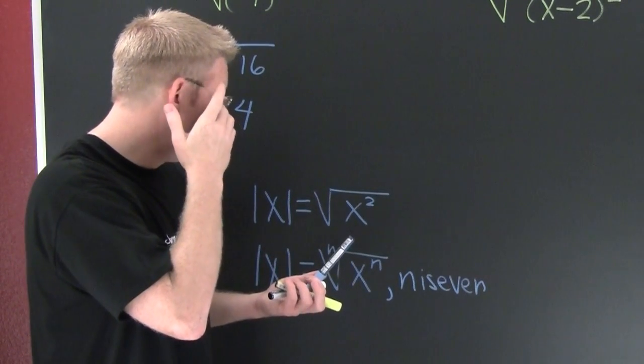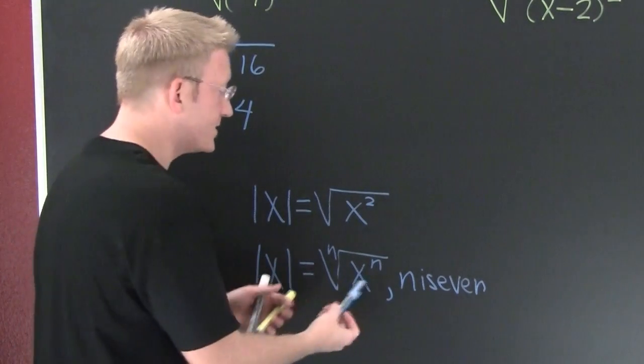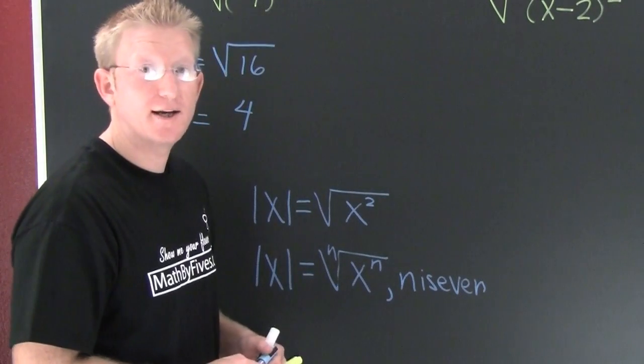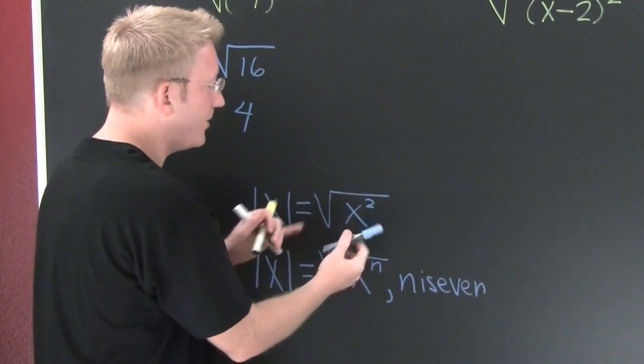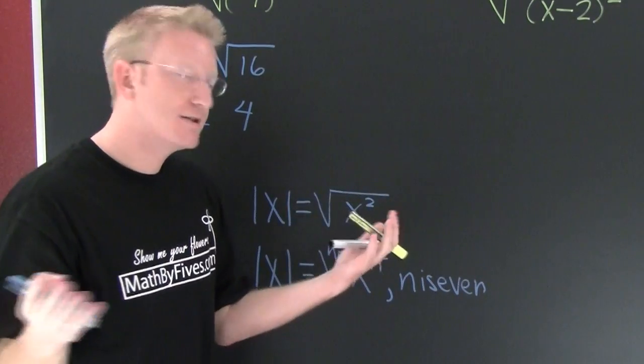But you're like, what if n is odd? If n is odd, it's just going to be the radicand. Because we're not going to have this phenomenon where you square it, makes it positive.